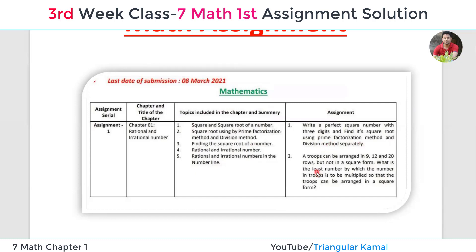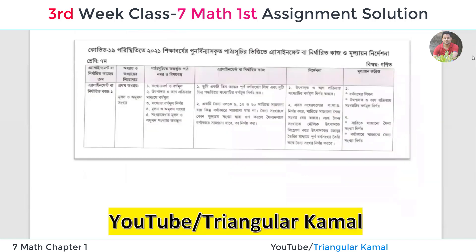The second question: Troops can be arranged in 9, 12, and 20 rows but not in a square form. What is the least number by which the number of troops is to be multiplied so that the troops can be arranged in square form?